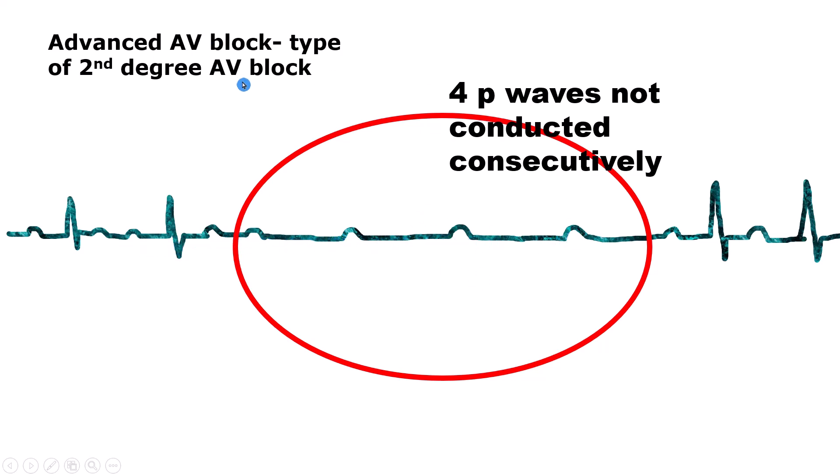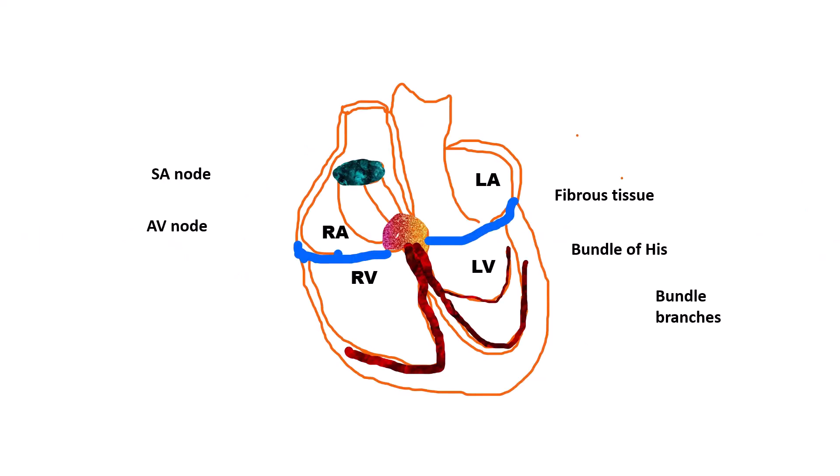Third degree or complete AV block: first and second degree AV heart blocks are examples of incomplete block because the AV junction conducts at least some stimuli to the ventricles. With third degree or complete heart block, no stimuli are transmitted from the atria to the ventricles. Instead, the atria and ventricles are paced independently.